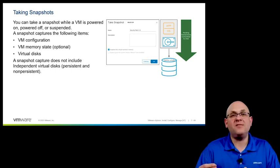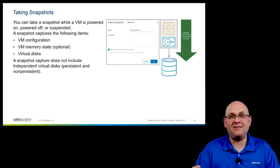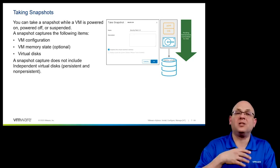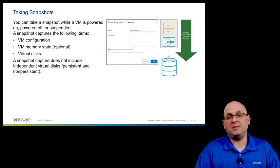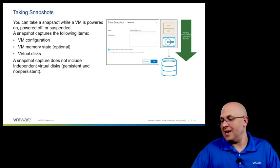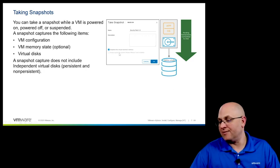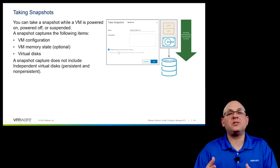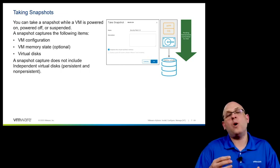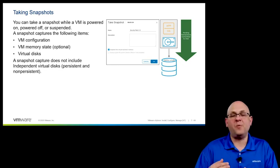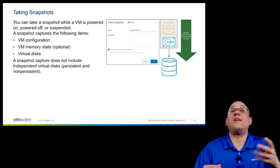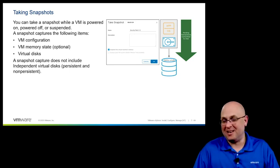If you make changes to the configuration of a virtual machine — edit the settings of that VM — after you take a snapshot, by restoring that snapshot you'll go back to that original virtual machine configuration. If a virtual machine is powered on when you take a snapshot, you have the option of snapshotting the virtual machine's memory. That captures the memory state so that when we do a restore, we don't even have to reboot the VM — we just load the memory state and instantly travel back in time to that state.